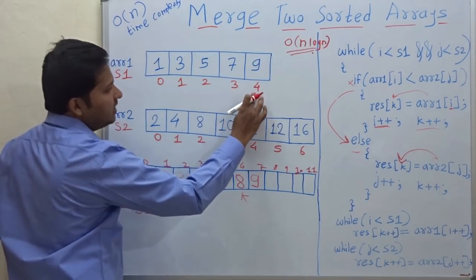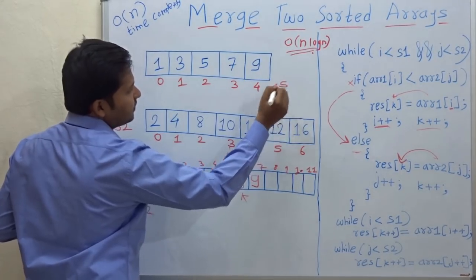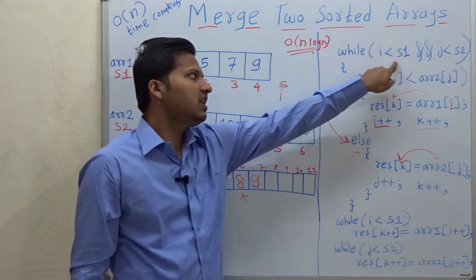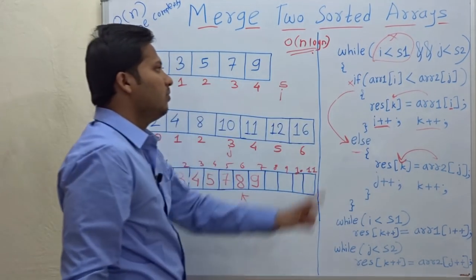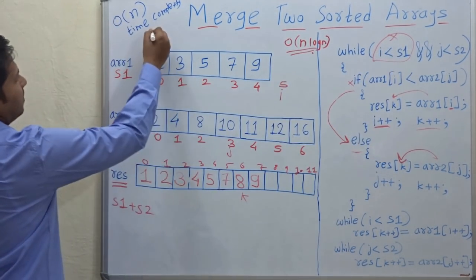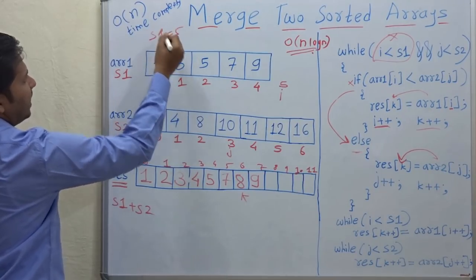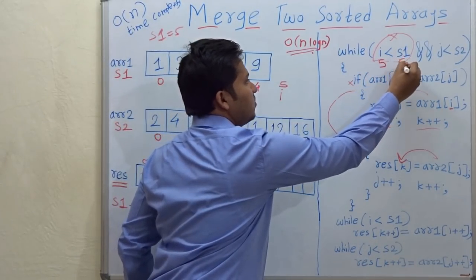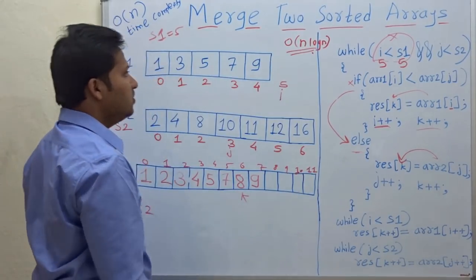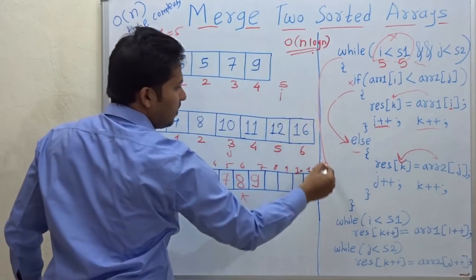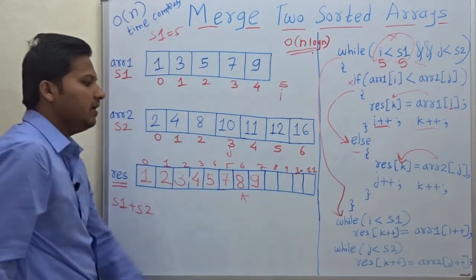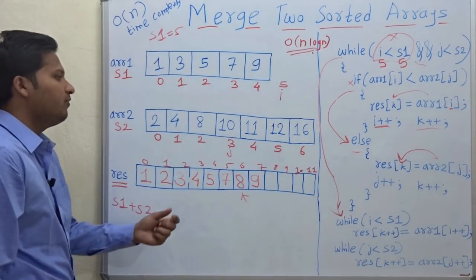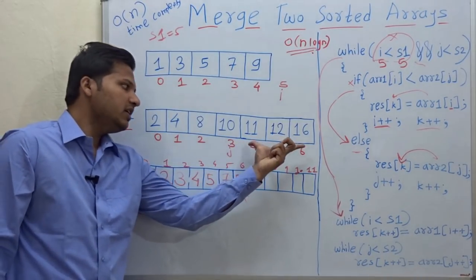Now check: is 9 less than 10? Yes, so 9 is shifted to the resultant array and i is incremented, making i equal to 5. When i becomes 5, the condition i less than s1 fails, because s1 is 5 and 5 is not less than 5. Since this is an AND condition, we exit the while loop.